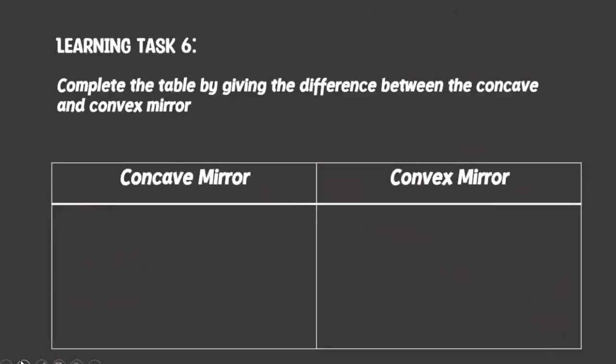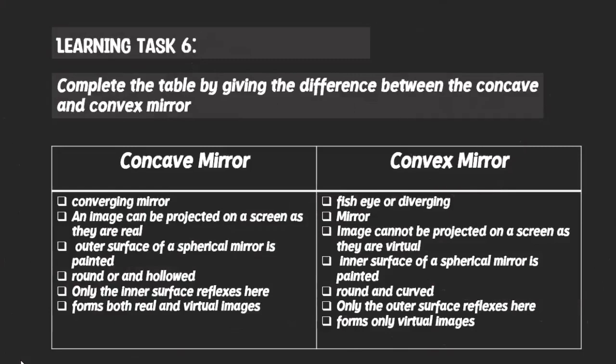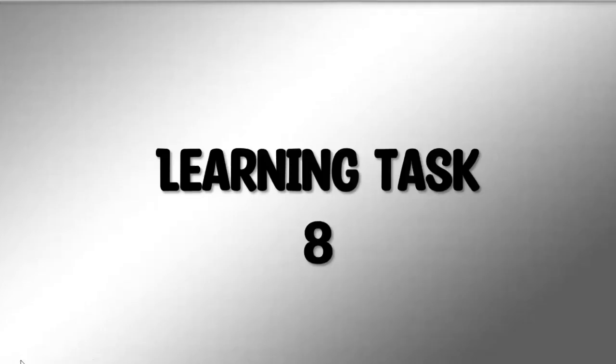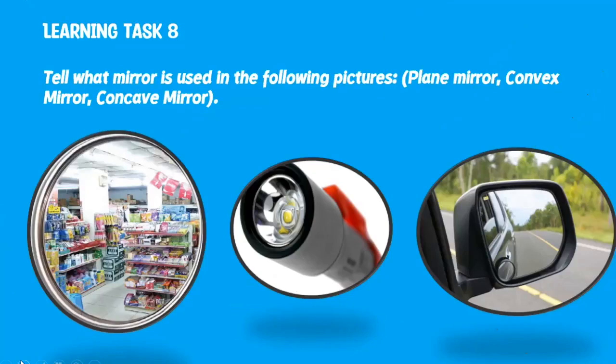For learning task 6, complete the table by giving the differences between the concave and convex mirror. For learning task 7, complete the table using the information gathered from learning task 3. The first column has the qualitative description of image using LOSS — which stands for location of image, orientation of image, size of the image, and type of image. The second and third columns are for the convex mirror and the concave mirror respectively.